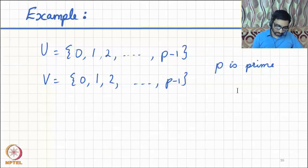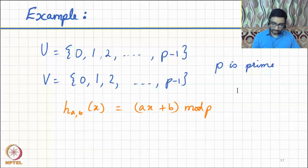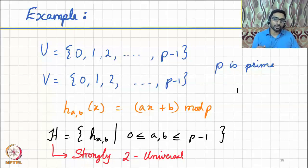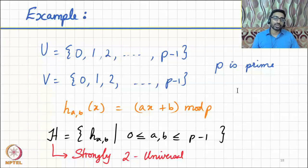How do we construct a strongly two-universal family? Let the universe range from 0 to p−1, where p is a prime, and also let V range from 0 to p−1. Again we define each hash function using parameters a and b: h_{a,b}(x) = (ax + b) mod p. The family induced by the various choices of a and b can be proven to be a strongly two-universal family of hash functions. To draw a hash function uniformly at random from this family, all we need to do is draw two numbers a and b from 0 to p−1.